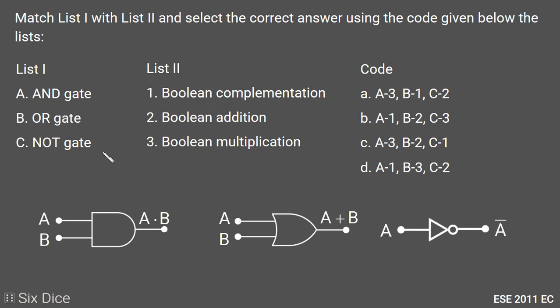So it is Boolean complementation. A matches with the third option, B matches with the second option, and C matches with the first option.